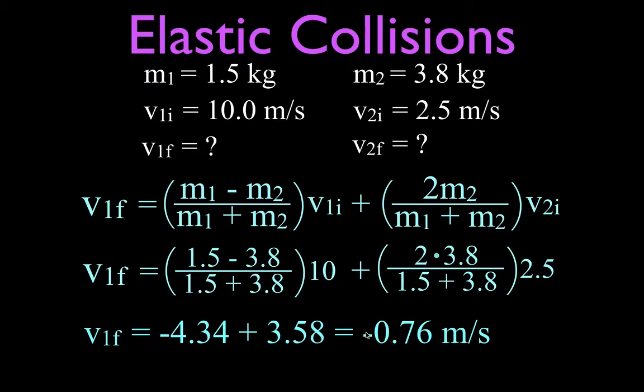So if we take this 10 to be positive to the right, now it's going to be moving with a velocity of minus 0.76 meters per second, which is going to be to the left because this is negative, that's what that negative term designates or tells us.